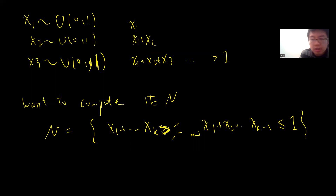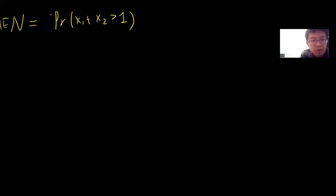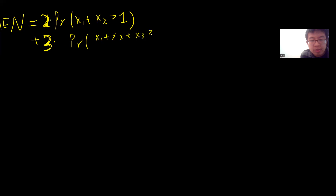This problem can actually be calculated very simply using properties of the uniform distribution. One obvious way is to write down the expression for E[N]. The first time you can't stop, but from the second time onward you take the probability that X1 is greater than 1 times 1, then for n=2 the probability that you need exactly two draws, and for n=3 the probability that X1+X2+X3 > 1 but X1+X2 ≤ 1, and so on.